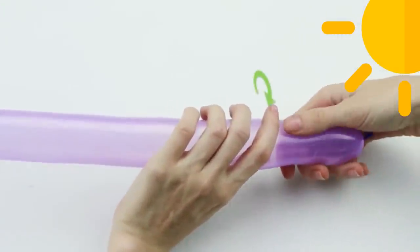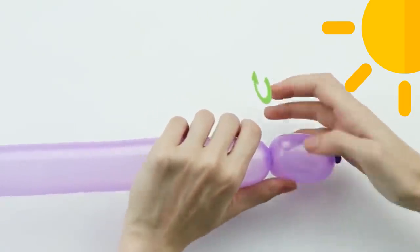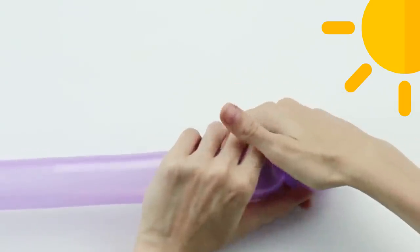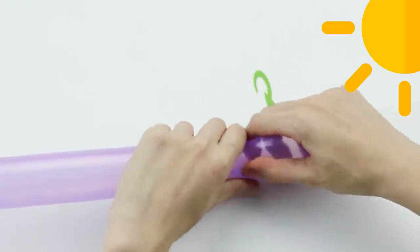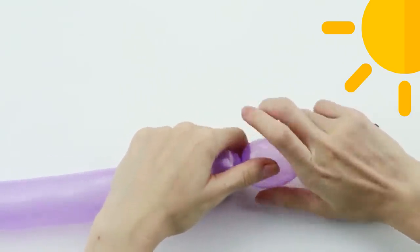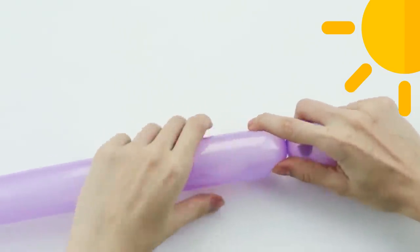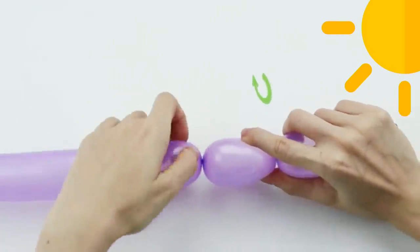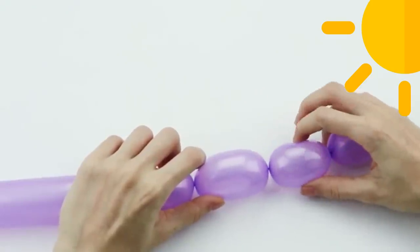Make 3 basic twists. Starting at the knotted end of the balloon, make 3 basic twists to create a total of 4 balloon segments. The first segment, which includes the balloon's knot, will form the dog's snout. It is slightly longer than the second two segments, which will form the dog's ears. The last segment, which will be twisted into the dog's body, is the longest.